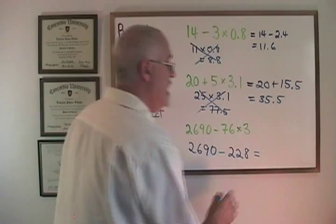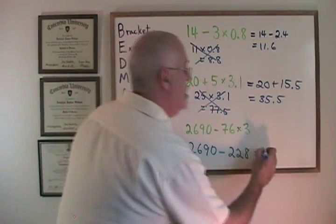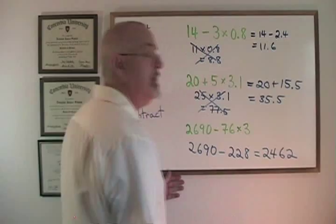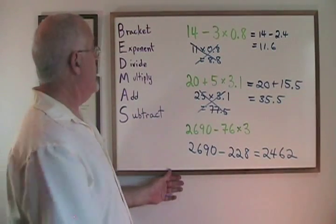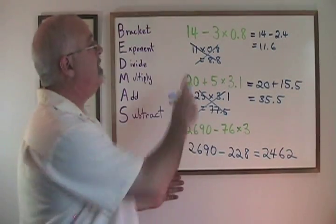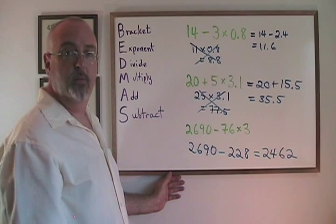And therefore our final answer is 2462. Remember to apply the rule of BEDMAS when you do multiple step computations to avoid mistakes.